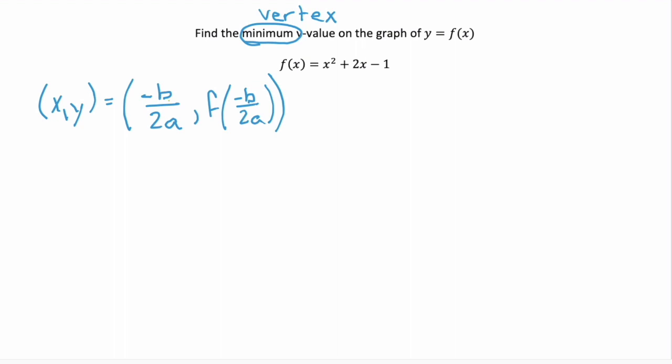And remember to find your b and your a, you use that standard format for a quadratic which is ax squared plus bx plus c. For our problem our a is going to be a value of 1, our b is 2, and our c is negative 1.